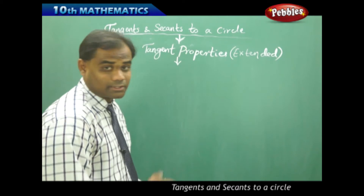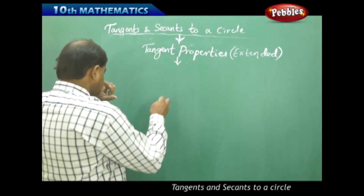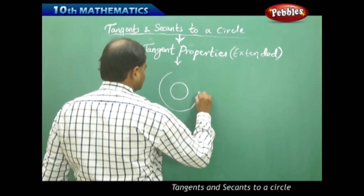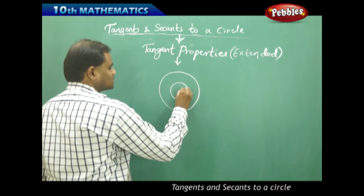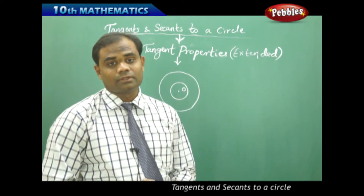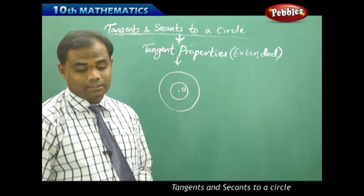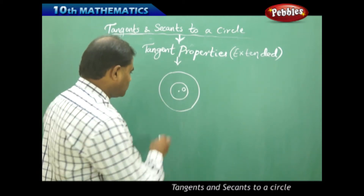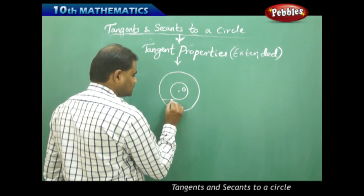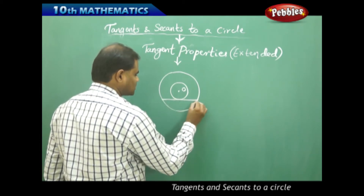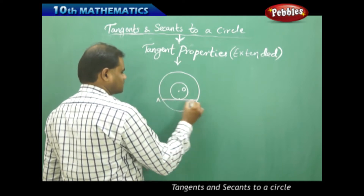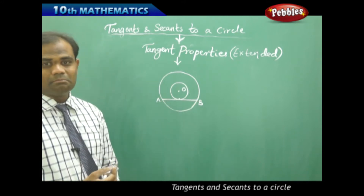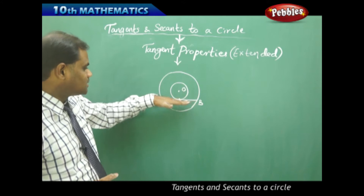Let's start with concentric circles. We take two circles which are concentric to each other — concentric meaning with the same center. Now let me draw a chord for the bigger circle, say AB, which is also the secant for the bigger circle. This chord AB makes AB a tangent to the smaller circle.